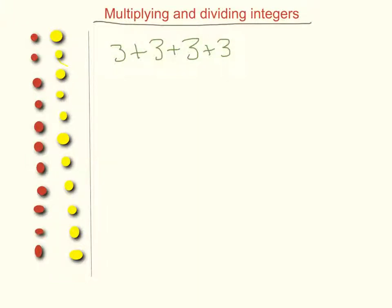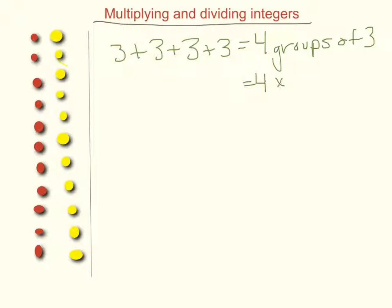Multiplying and dividing integers. This focus is going to be more on the multiplying of integers. We know multiplication is also repeated addition, so if we had 3 plus 3 plus 3 plus 3, we could say that is 4 groups of 3, and we could write that as 4 times 3, which we know is 12.